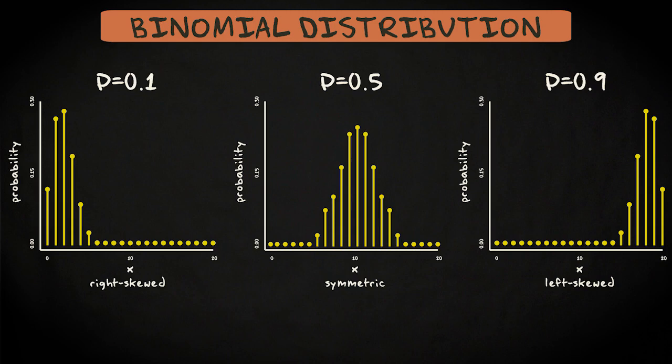In general, a binomial distribution with a low probability of success is right skewed, while that with a high probability of success is left skewed.